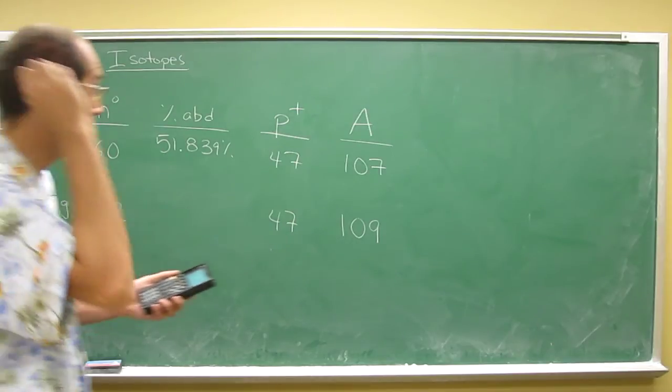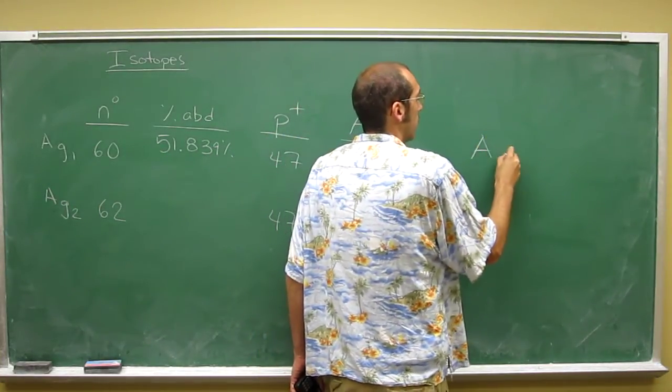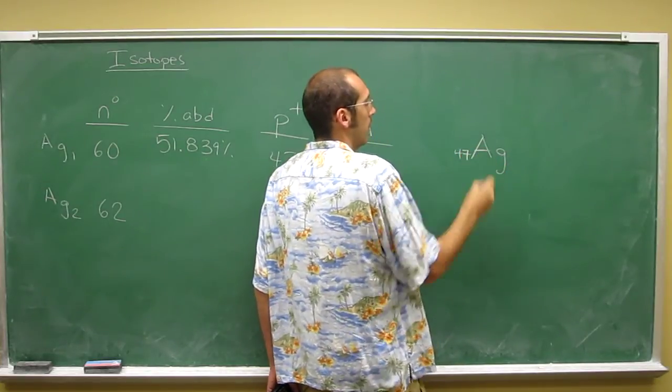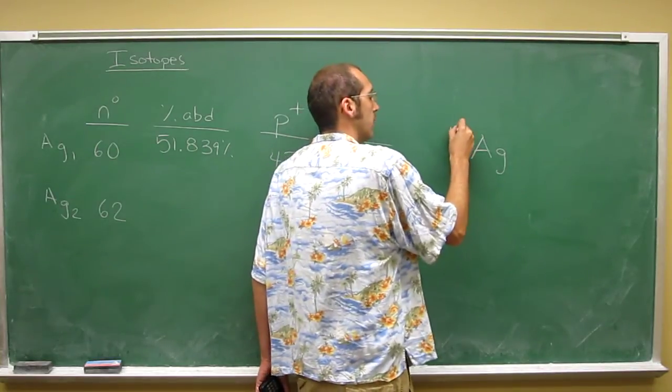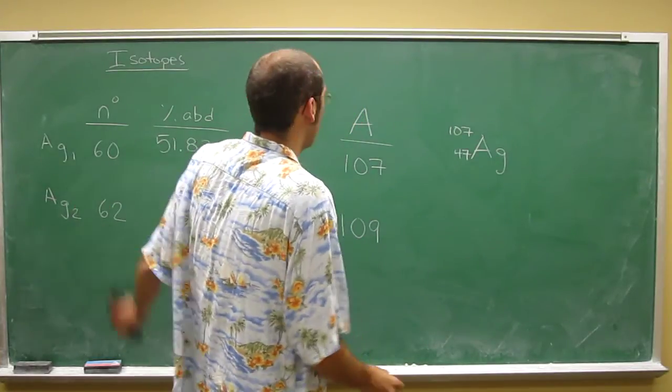So then it wants you to write the elemental symbol for them. The first one is going to be AG, remember subscript is the atomic number, which is the same as the number of protons, 47, and the superscript is the 107. So that's the first silver.